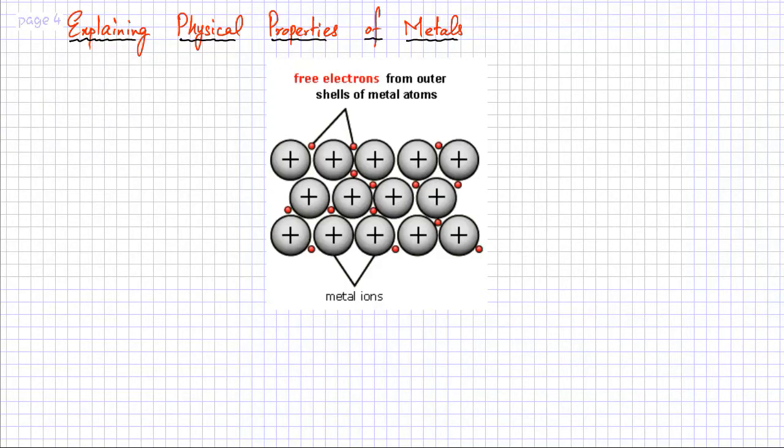In this lecture I am going to try and explain to you the physical properties of metals. We just discussed what the physical properties of metals were: they had high melting and boiling points, they were malleable and ductile, and they were very good conductors of electricity.